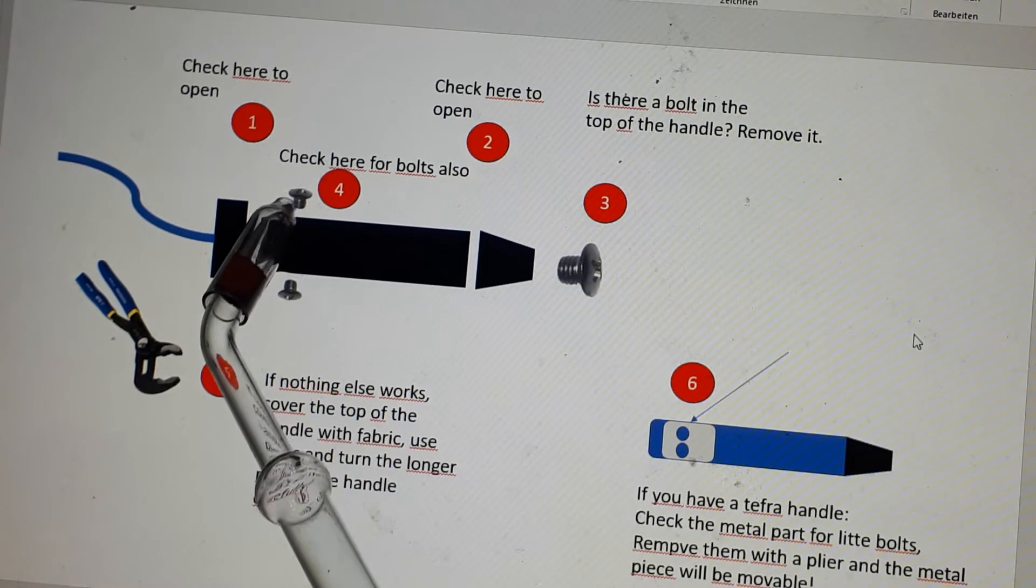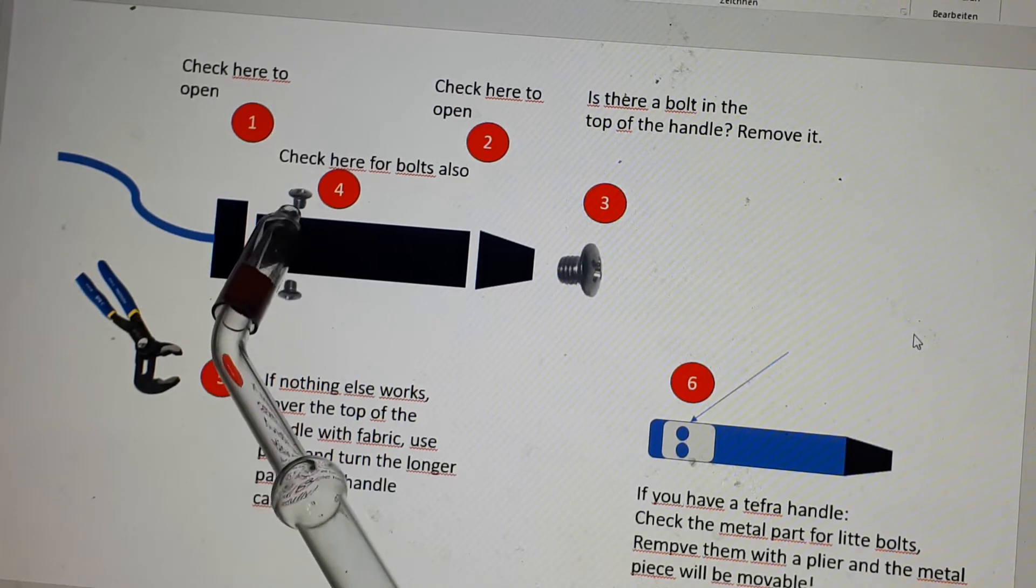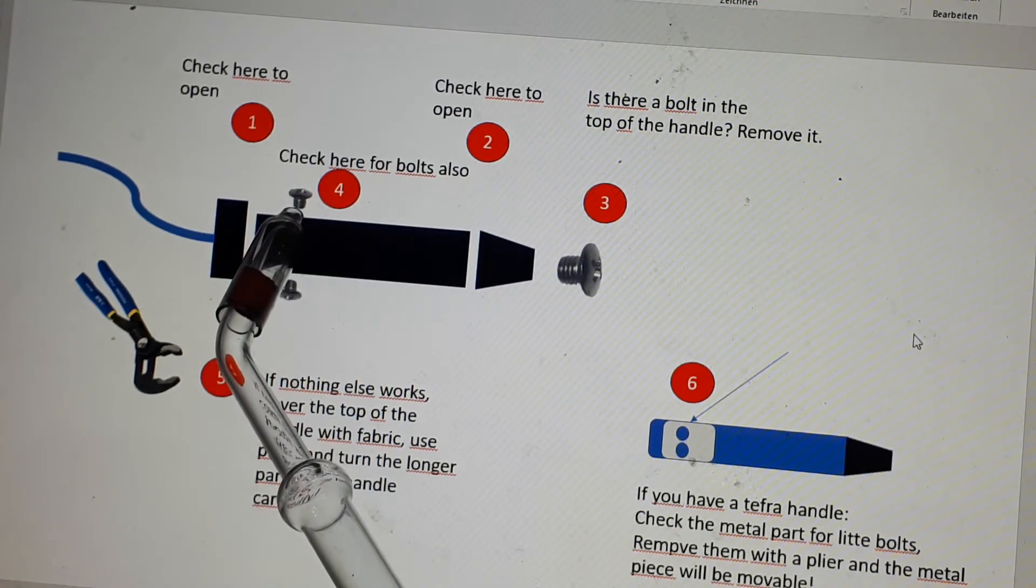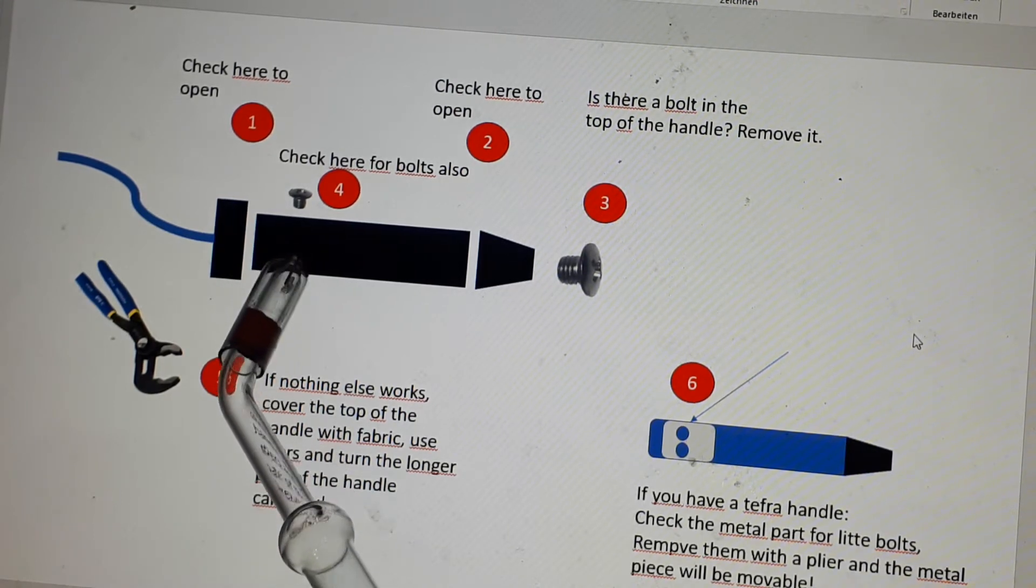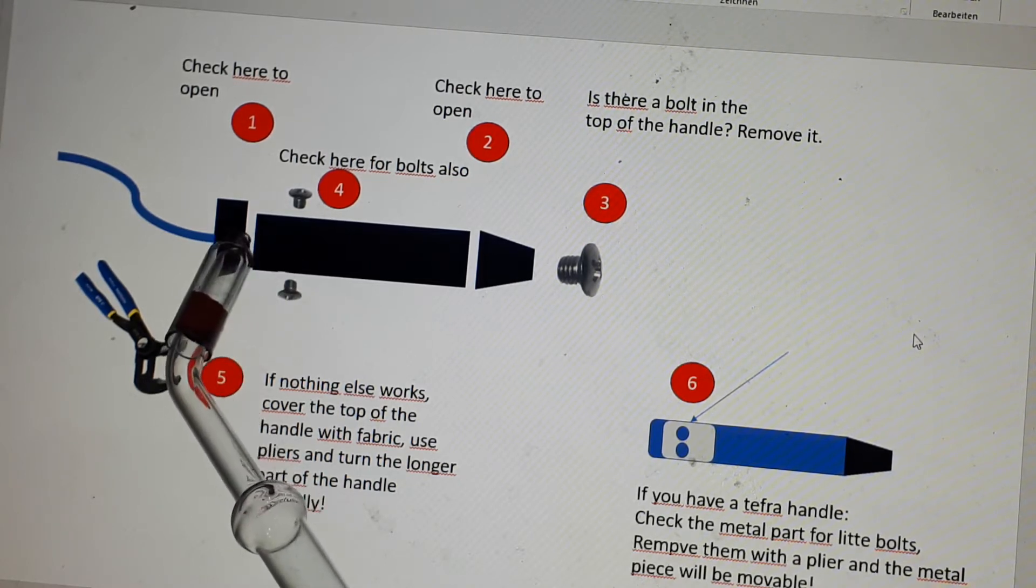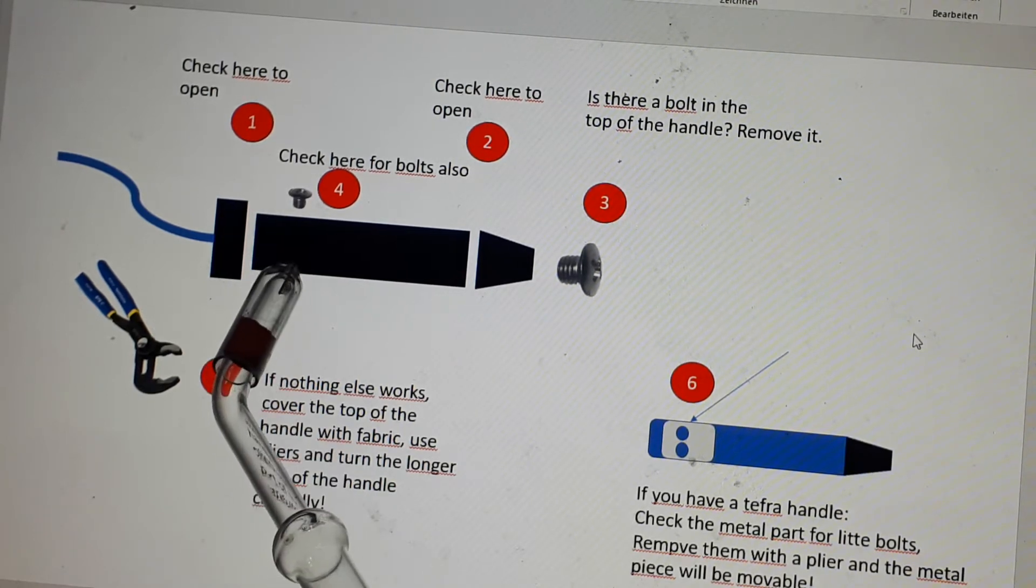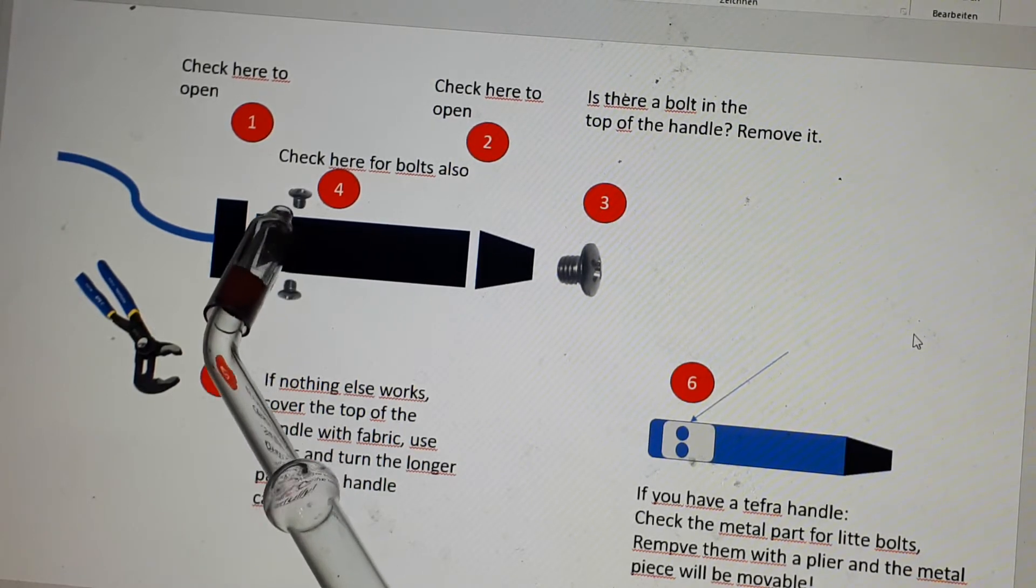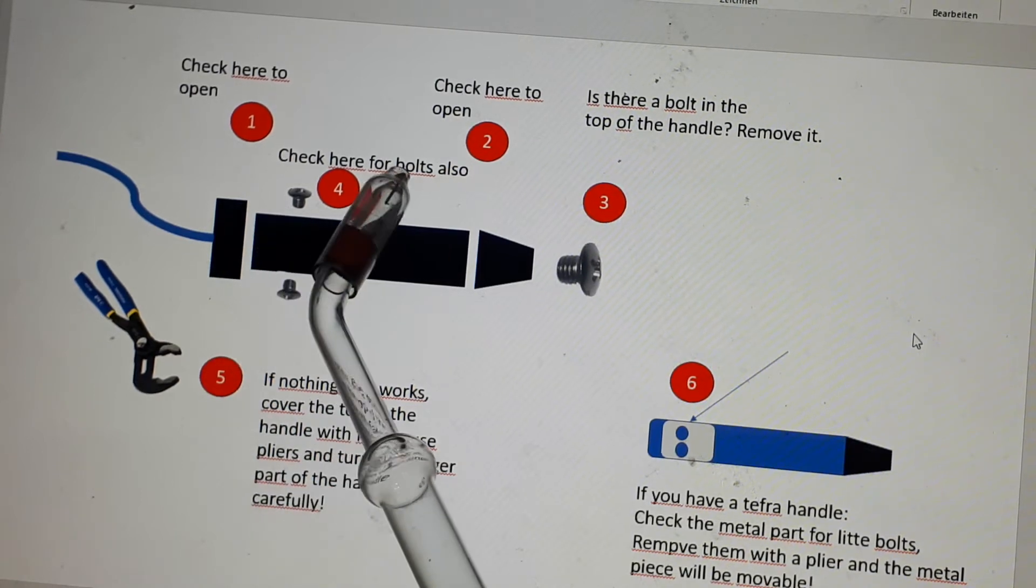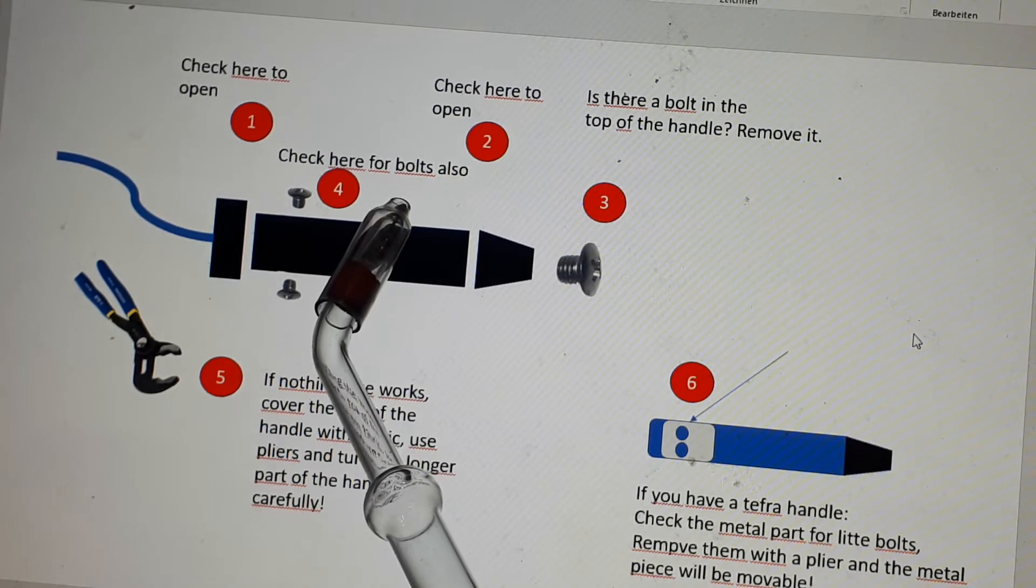So there are also some little bolts here or here. These are very small bolts that are in the first 30 percent of the handle, and they are keeping the top part connected to the handle. So you check for some little bolts that are hidden sometimes here and here, and they are also covered with a darkish brownish material to protect them.